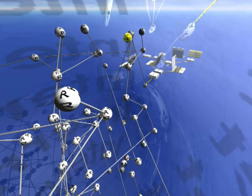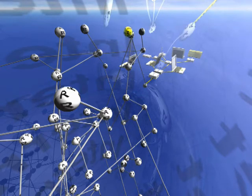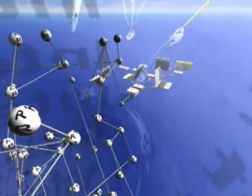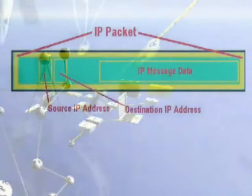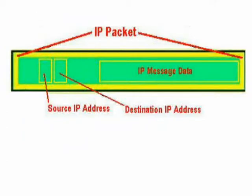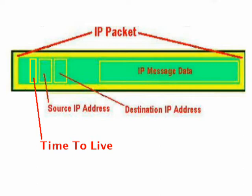Accordingly, every internet packet includes a field named Time to Live, or TTL, and each router that forwards a packet always decrements that value. When the originating computer builds the outgoing packet, it makes a conservative estimate of the number of router hops needed to traverse the internet to the destination, and the Time to Live field is initialized accordingly. A typical trip across the internet may need about 15 router hops, but the TTL field is generally set to 32 or more. Most operating systems always set all outgoing TTL fields to the same high starting value.